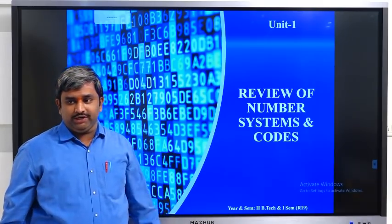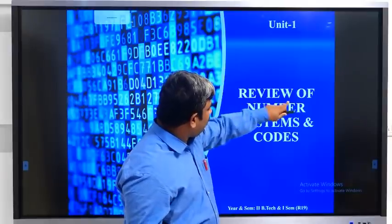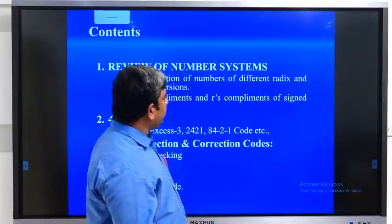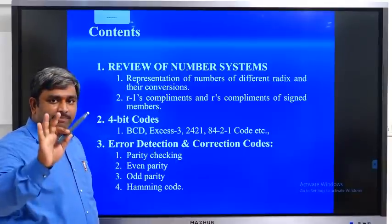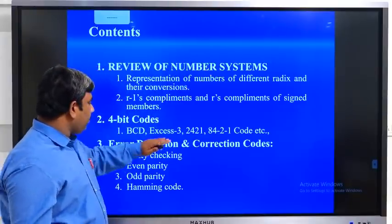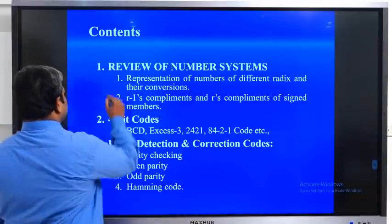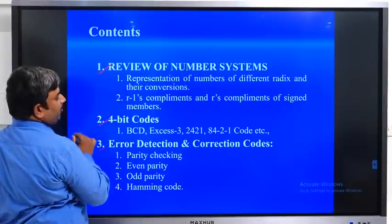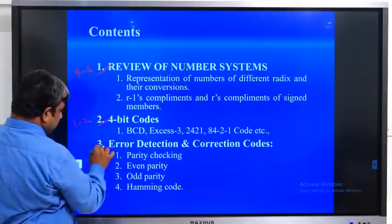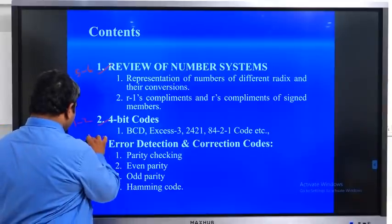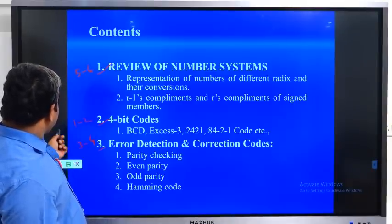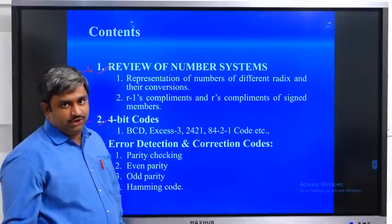Coming to our first unit — the title is 'Review of Number Systems and Codes.' The syllabus is divided into three parts: Part 1 is Review of Number Systems, Part 2 is Four-Bit Codes, and Part 3 is Error Detection and Correction Codes. Part 1 will take five to six classes, Part 2 one to two classes, and Part 3 three to four classes. Completing this first unit requires nearly 10 to 14 hours.